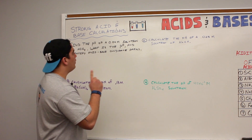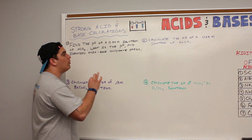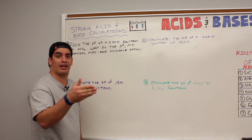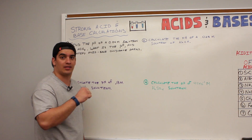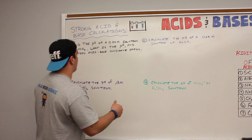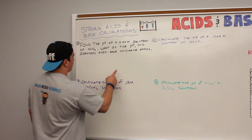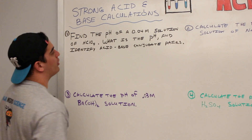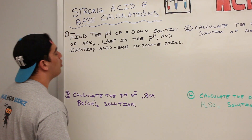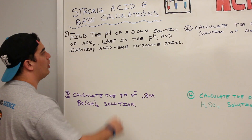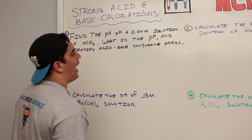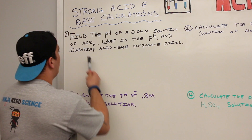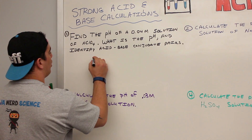When doing these calculations, we're only ever going to be using pH or pOH equal to the negative log of the respective ion, whether it be H⁺ or hydroxide. Let's dive right in. The first question says: find the pH of a 0.04 molar solution of perchloric acid, and identify the acid-base conjugate pairs.